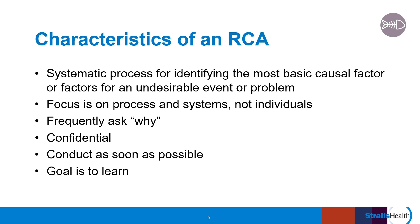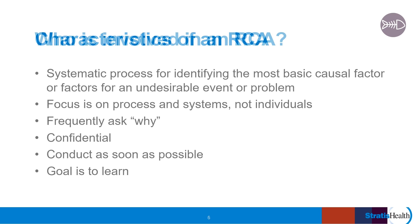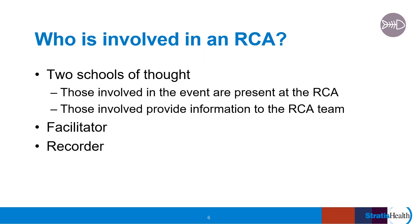There are two schools of thought on who should be involved in a root cause analysis. The first is that the individuals who were involved in the actual event should be the ones on the root cause analysis team — this assumes that the team environment feels safe so that individuals can tell their story openly and honestly without fear of retaliation or retribution. The other school of thought is that because those involved may be too close to the event or have too many emotions associated with it, they are asked for their detailed description of what occurred and another team uses that information to inform the actual RCA process.